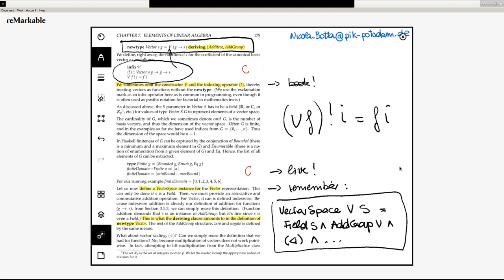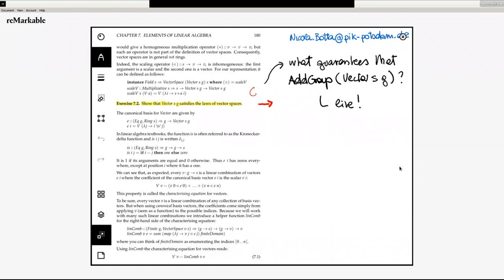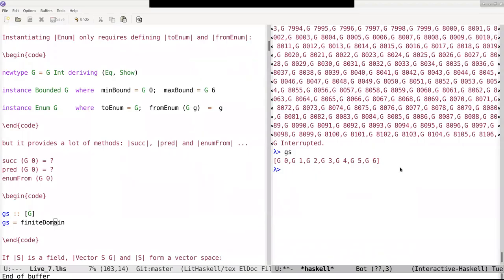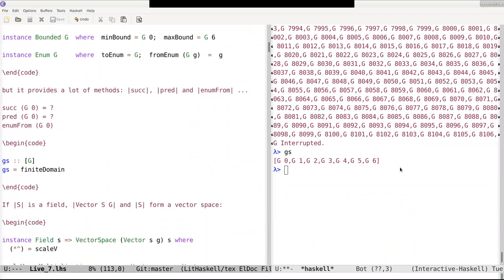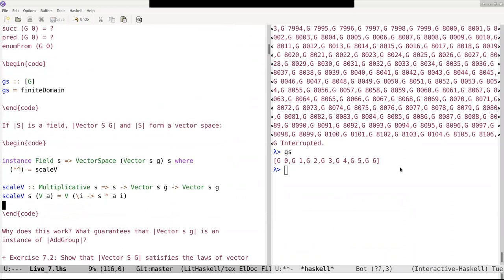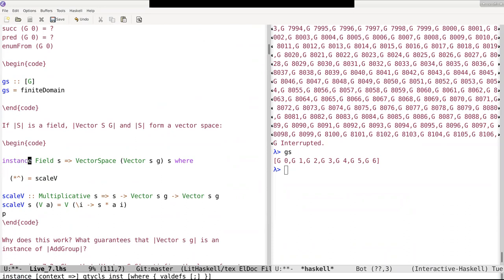These are the things that we have to provide in order to register, in order to instantiate, in order to say that this data type that we have defined vector GS is in fact an instance of a vector space. And this is what happens in the next bit of code that we are going to look at. So I'm going to switch back again to the Haskell code for this.